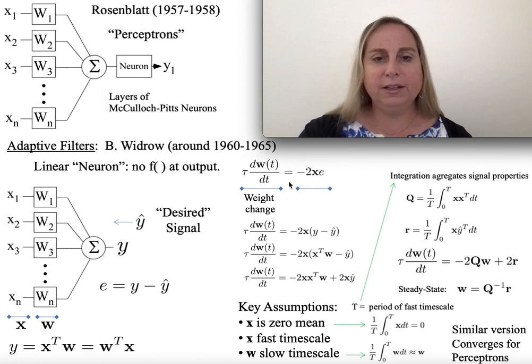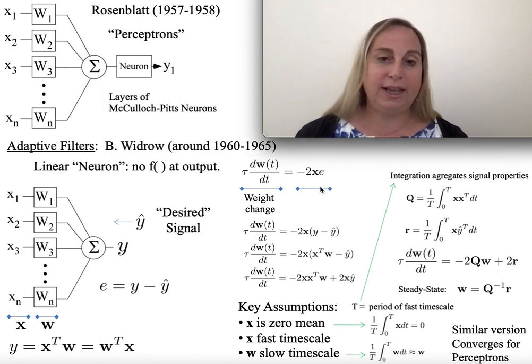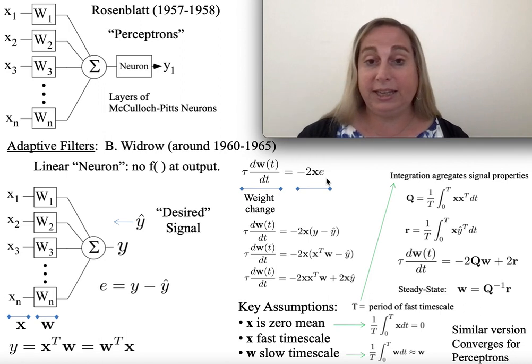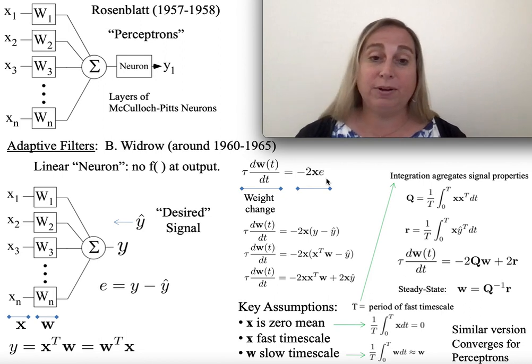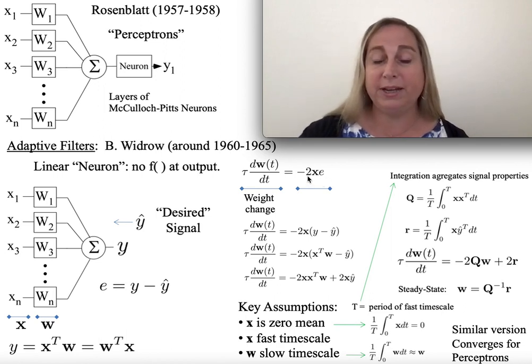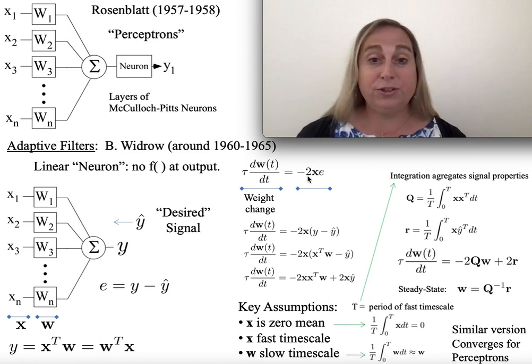You end up finding the learning rule is minus 2x, and x is a vector here, bold times e. Now this actually comes from minimizing a quadratic function. So that's why you often talk about these approaches as least mean square, because you're actually minimizing a quadratic function, which might be why you'd imagine there's a 2 there. If you think the derivative of x squared is 2x, this is effectively what's going on here.